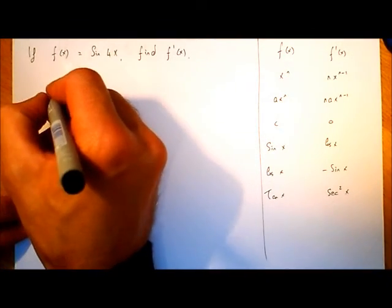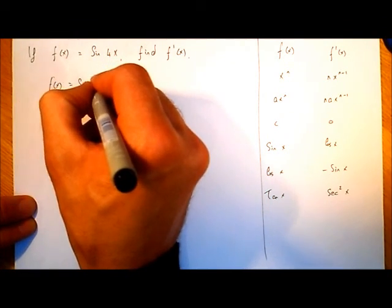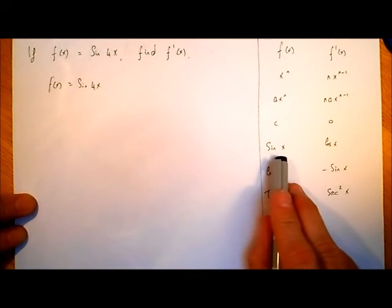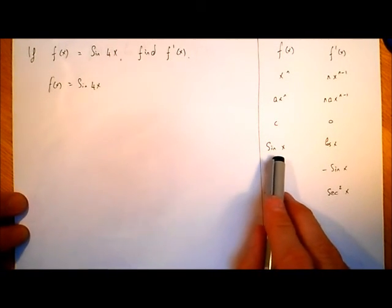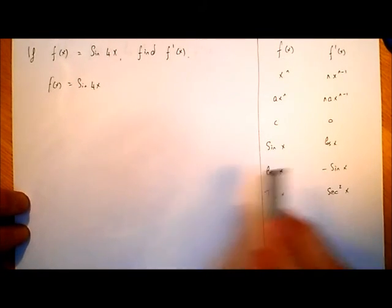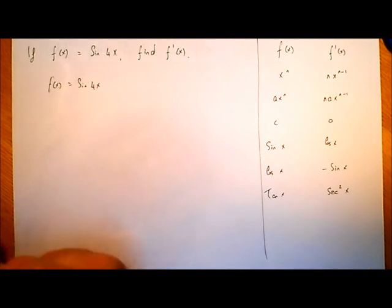So we start off with f(x) is equal to sin(4x). Now that looks like we can just use this rule over here, but we can't, because this rule says if we differentiate sine of something, sine of one thing, we get cos(x). Here we haven't got sine of one thing, we got sine of 4 times x. So we can't just use this rule here.